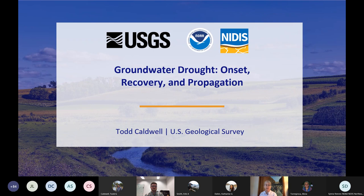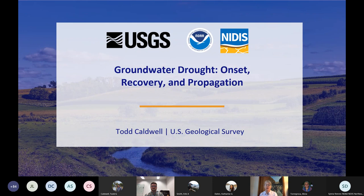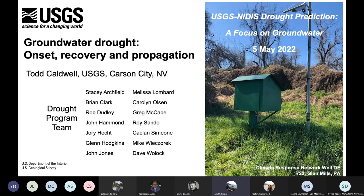We are now ready for our first presentation by Todd Caldwell with the USGS Nevada Water Sciences Center. Todd will be speaking on groundwater drought onset, recovery, and propagation. Todd is a groundwater hydrologist that specializes in unsaturated zone processes and remotely sensed soil products. He is a team member of the USGS drought program and works with NIDIS on the development of the National Coordinated Soil Moisture Monitoring Network. Working on the National Drought Program for the USGS Water Mission Area, I'd like to present some background on groundwater drought and drought propagation through the hydrological cycle.